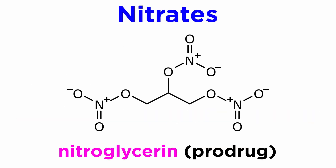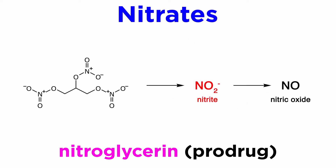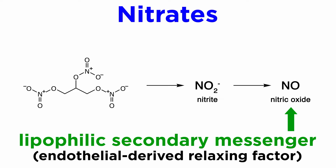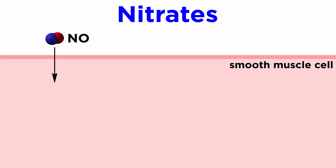Nitrates, such as nitroglycerin, are prodrugs that must be metabolized to nitrite anions and then reduced to nitric oxide. Nitric oxide is a lipophilic secondary messenger that the body endogenously produces in addition to these pharmacological interventions. It is sometimes referred to as endothelial-derived relaxing factor. Because of NO's lipophilicity, it passes freely into smooth muscle cells surrounding blood vessels and activates guanylate cyclase.